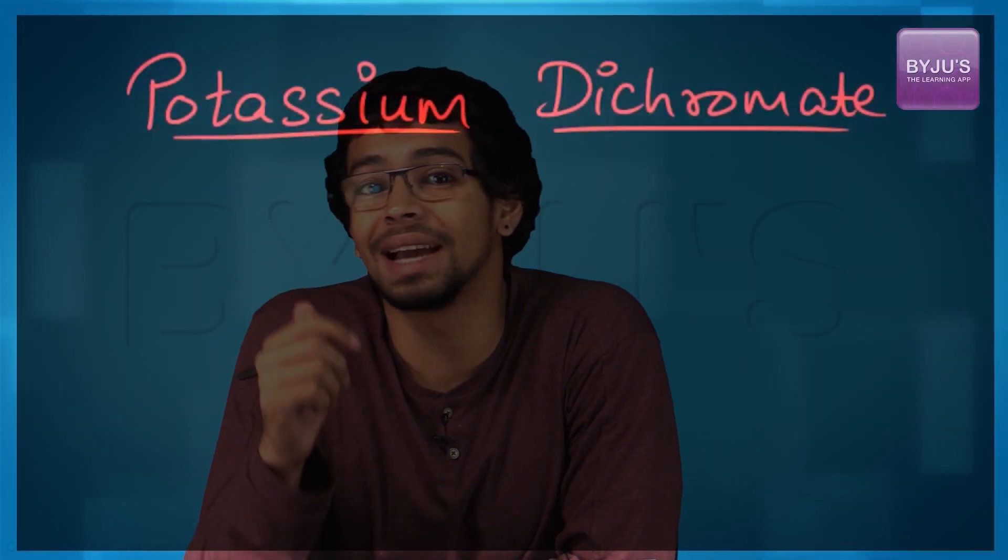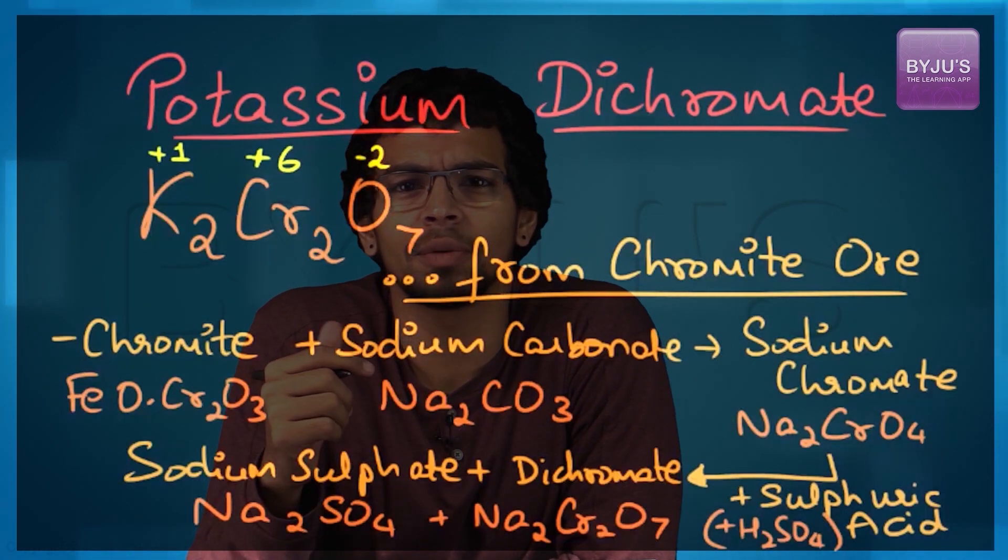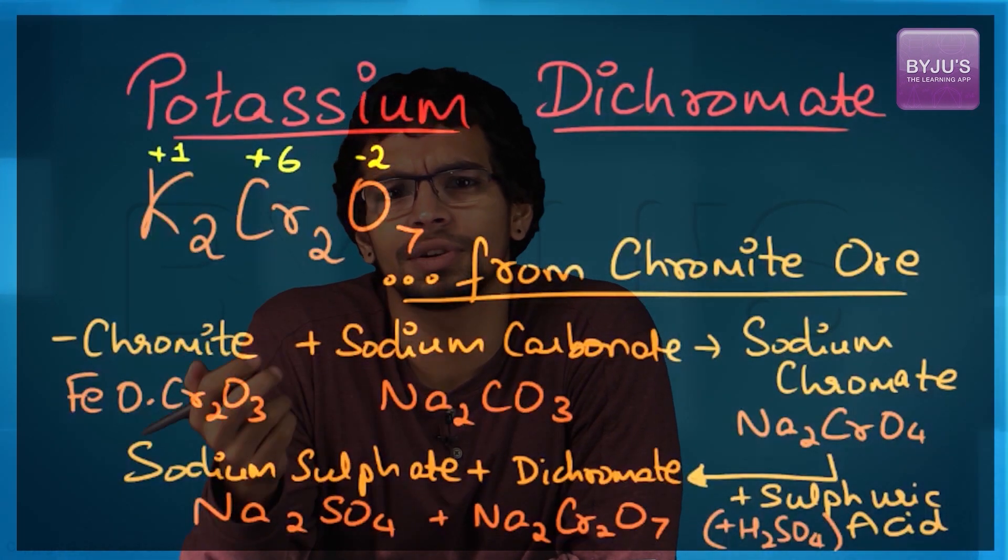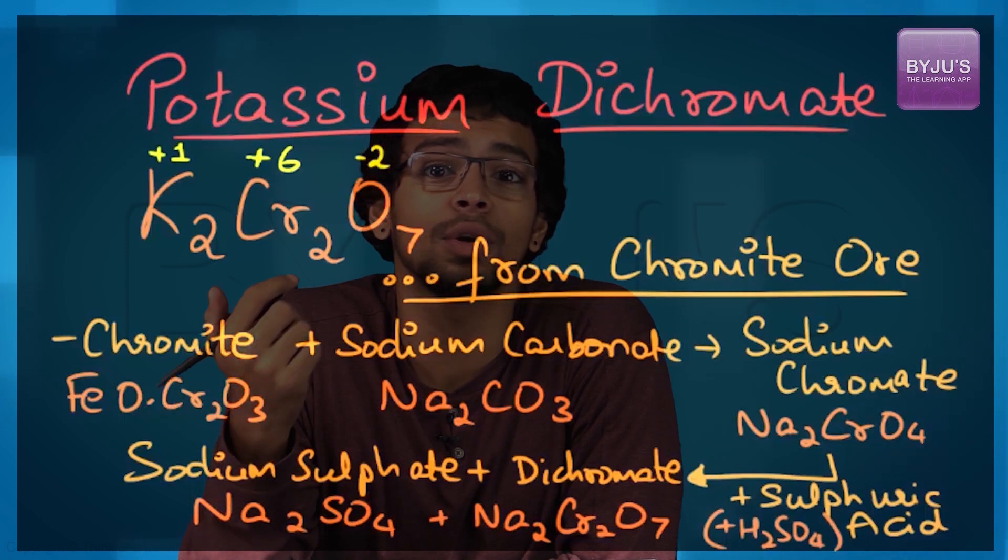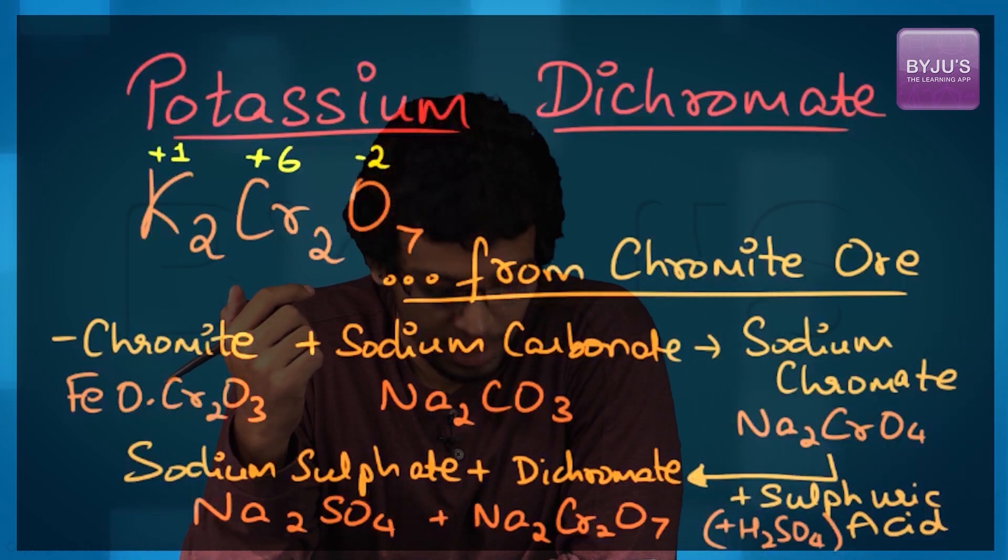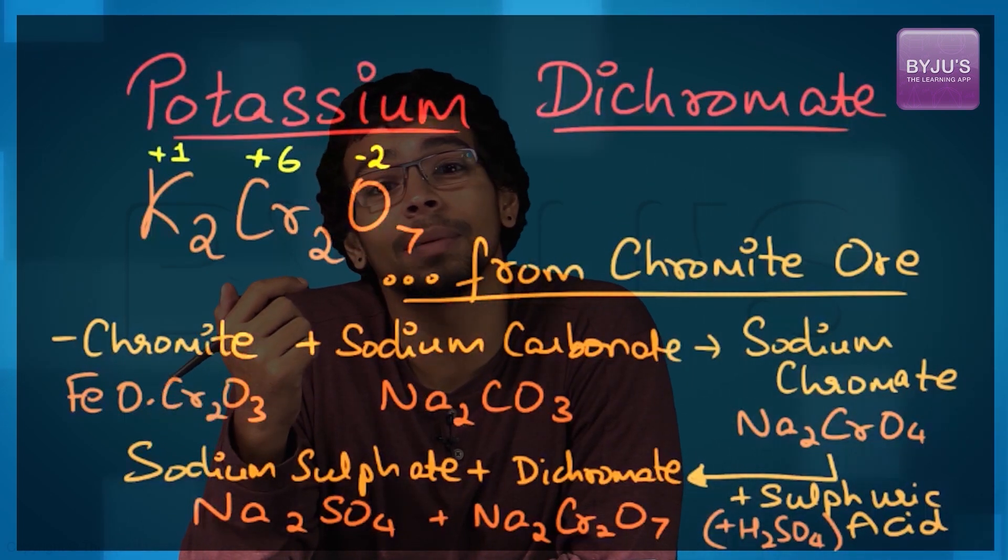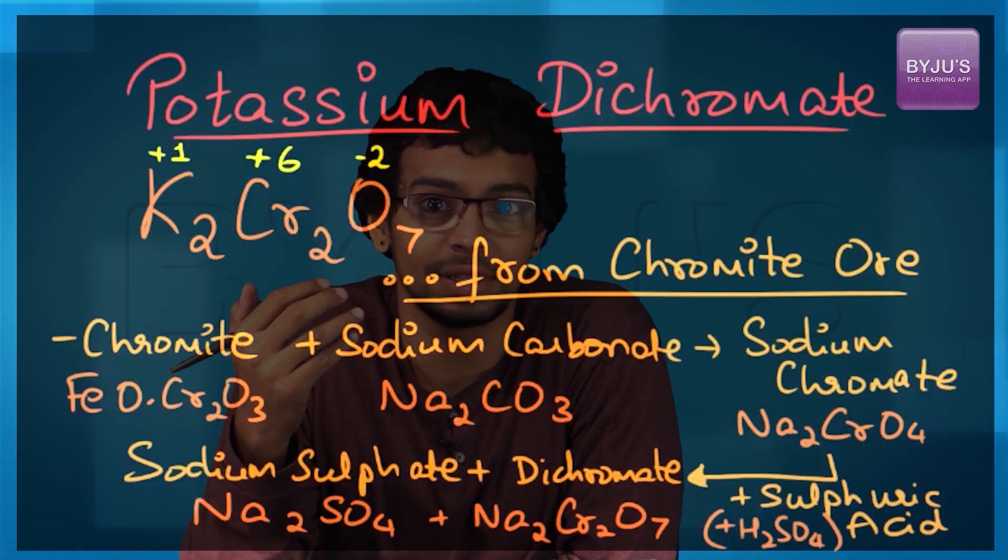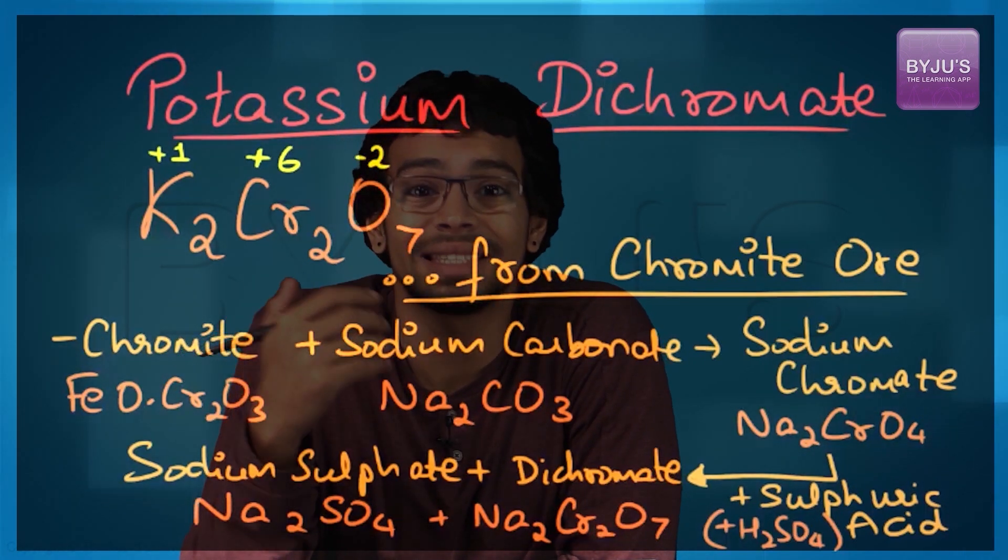A very important chromium compound is potassium dichromate. Potassium dichromate is a very important industrial compound. It is an orange solution with chemical formula K2Cr2O7, and the oxidation state of chromium is +6.